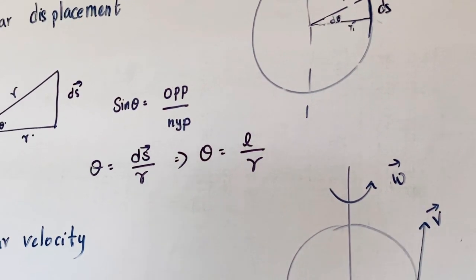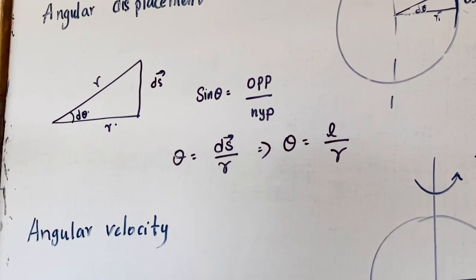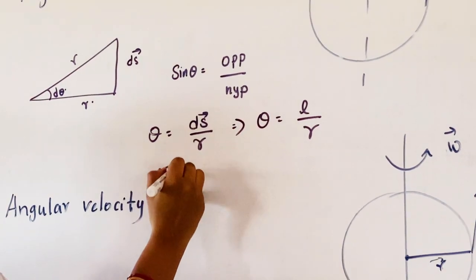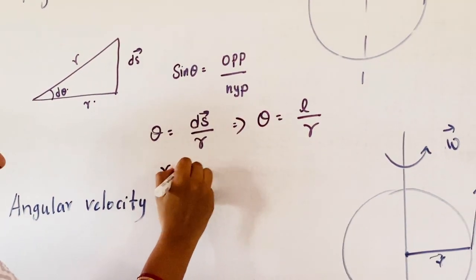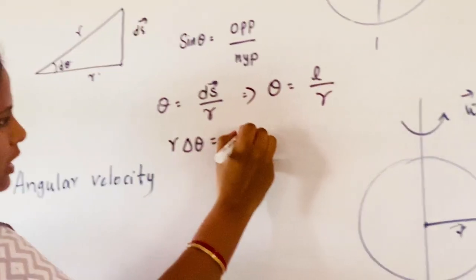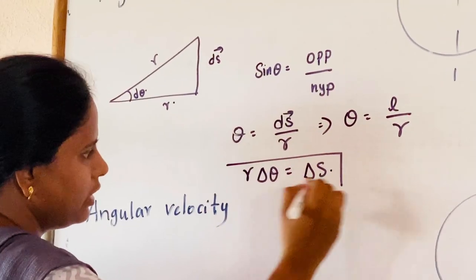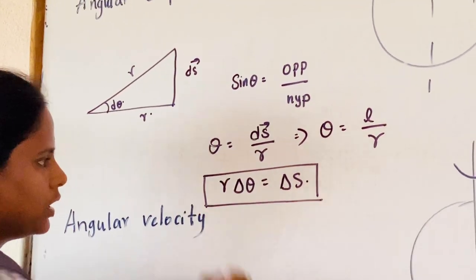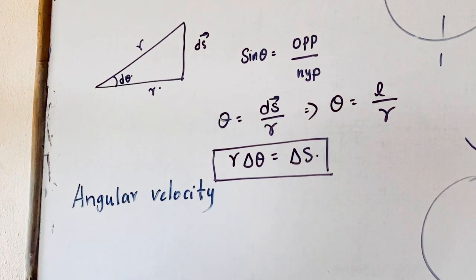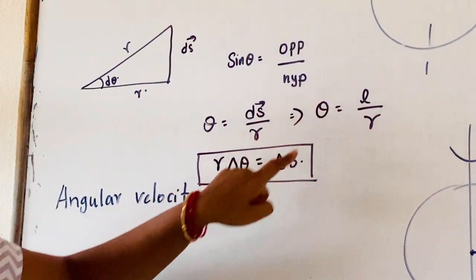So we have theta equals linear displacement l by radius vector r, or equivalently we can write it as r·delta-theta equals delta-s. This is also one valid relation. We can choose either one we want.